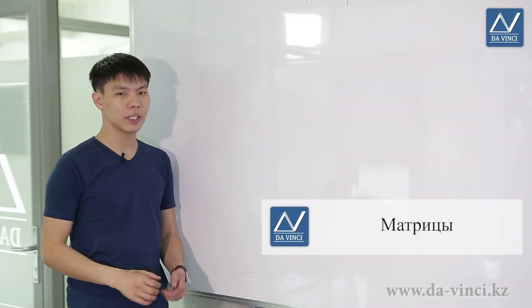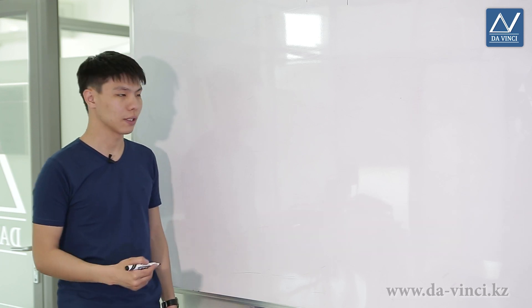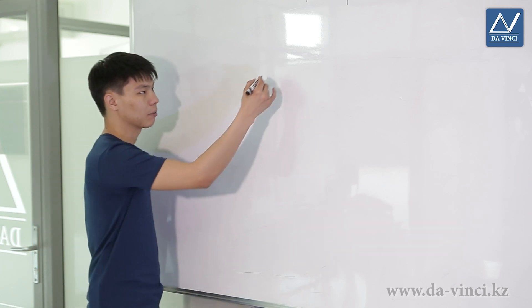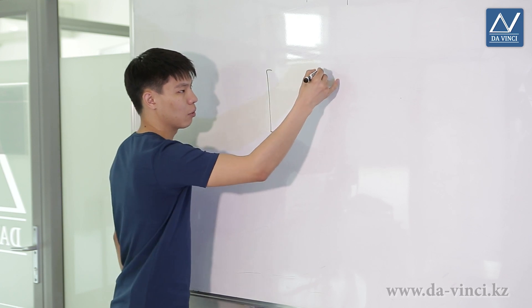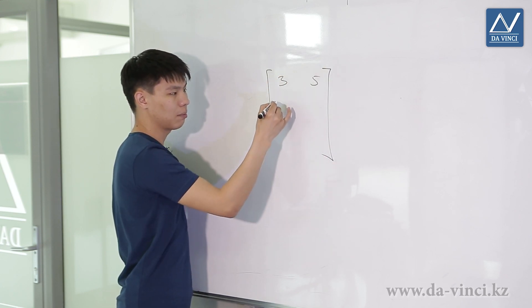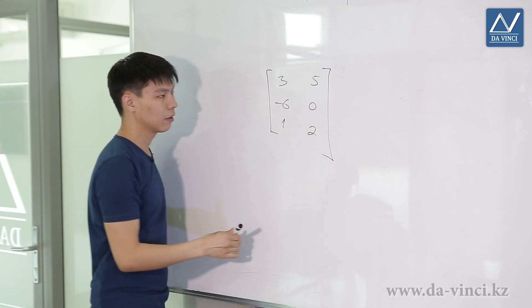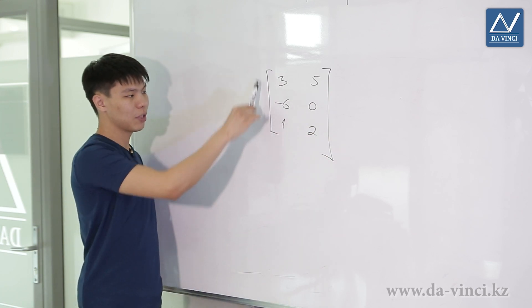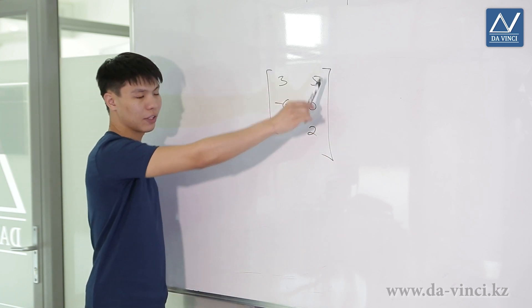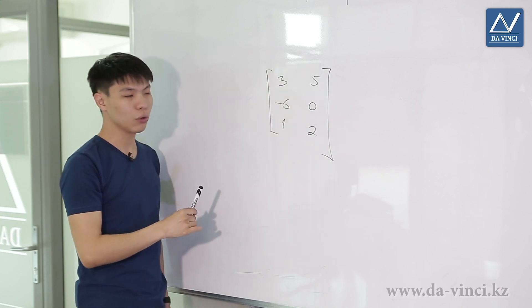In this lesson we will study matrices. Matrices are one of the most important mathematical objects and represent rectangular numerical tables. For example, we have a rectangular numerical table: 3, 5, minus 6, 0, 1, 2. Usually matrices are written in square brackets, but sometimes you can also find matrices in parentheses.